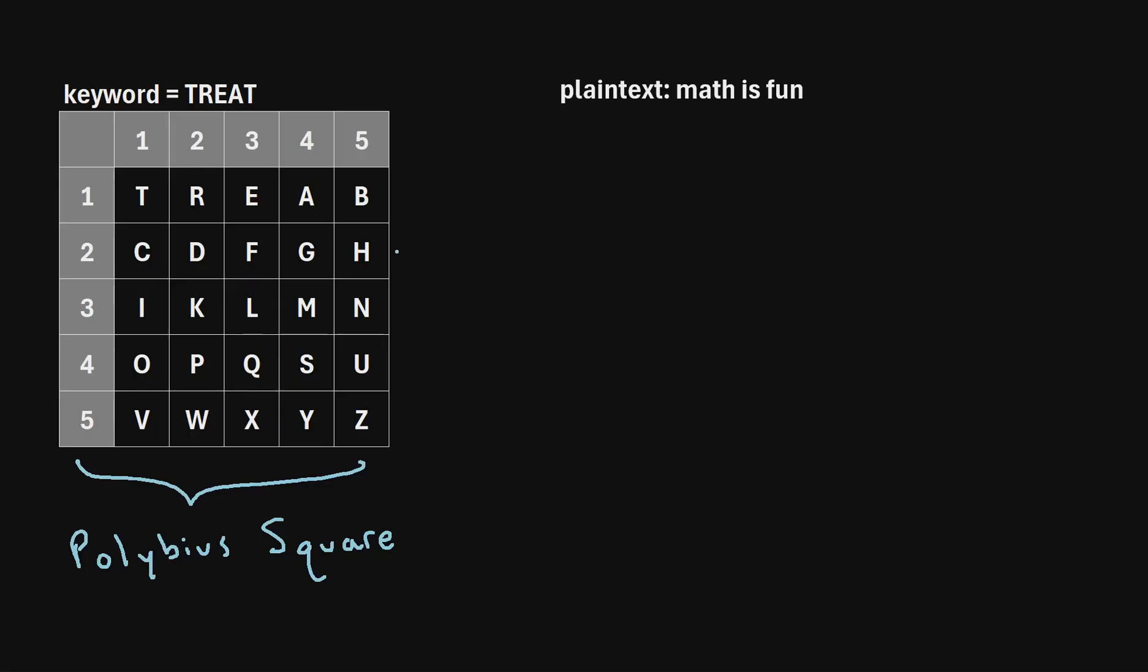Now once we've finished building our Polybius square, the next step is we need to pick a relatively short word known as a key. So for this example, let's say that we choose the word art as our key. What we're going to do is write this key over and over again until it's the same length as our plain text. So here's what that looks like.